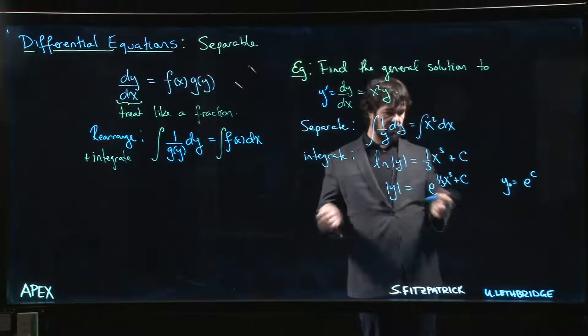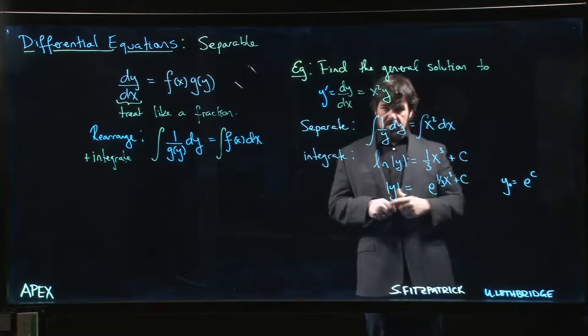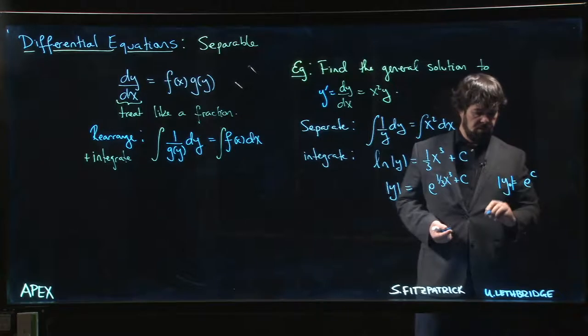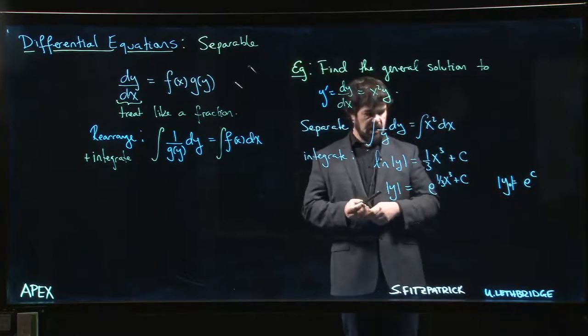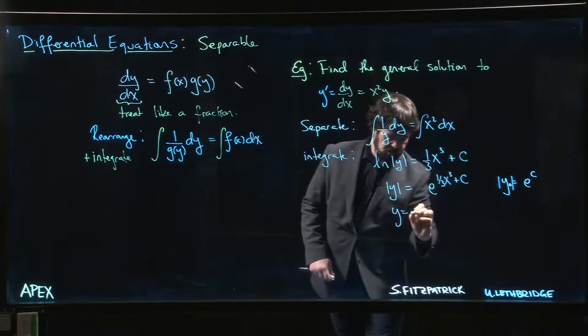So really the absolute value is there, and once you rewrite it with this y_naught out front, so if you write this as y is equal to y_naught e to the 1/3 x cubed, well this exponential here still can only be positive, but now this constant out front could be positive or negative.